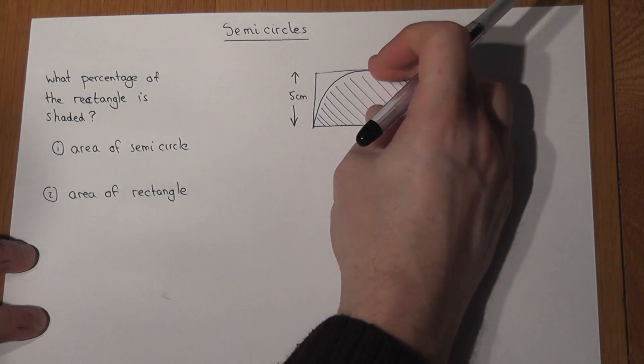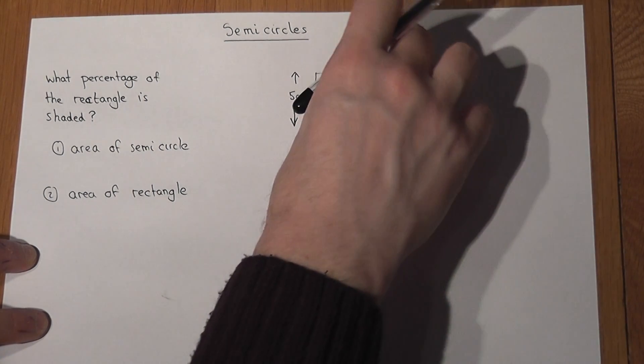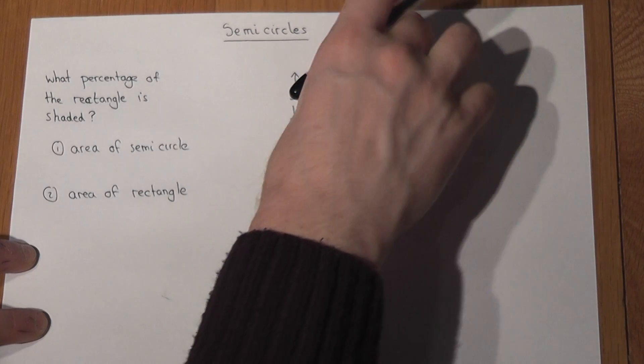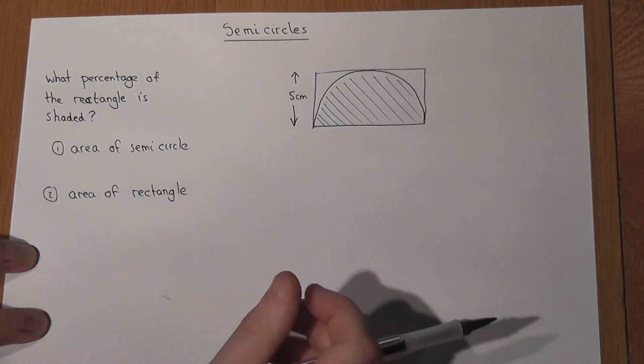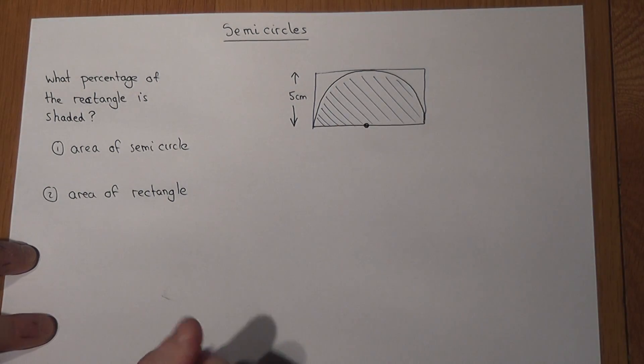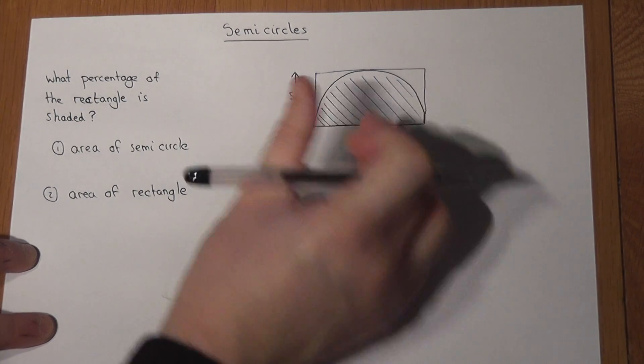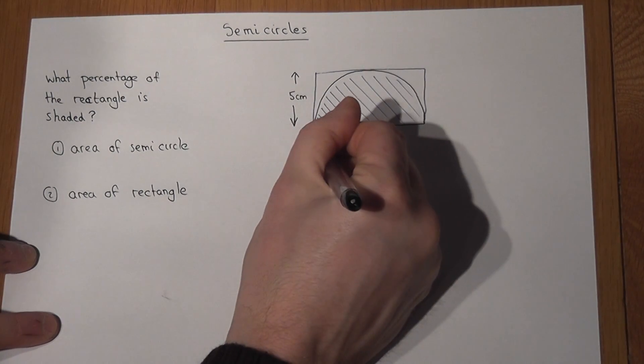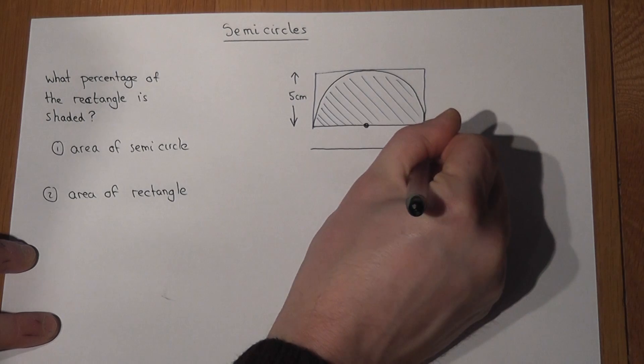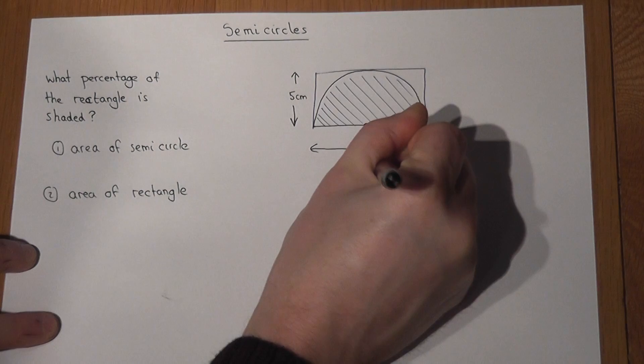Now the 5 has got to be the radius, and the radius is the same all around the shape. So if I imagine the centre of the semicircle, that's 5, therefore that's 5, and also that's 5. So therefore the entire length of that rectangle must be 5 plus 5, which equals 10.